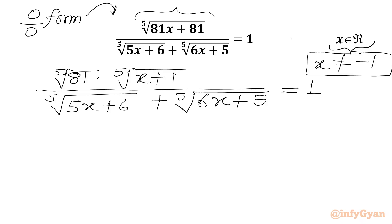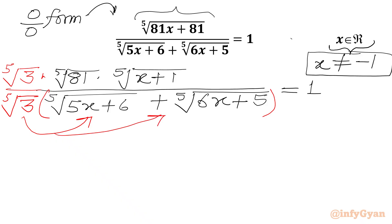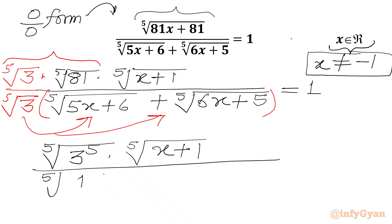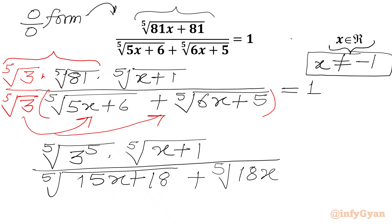Now I will multiply our LHS numerator and denominator by the fifth root of 3. Here also we will multiply with fifth root of 3, so we multiply this fifth root of 3 with both terms. In the numerator, fifth root of 3 times fifth root of 81 becomes fifth root of 3 to the power 1 plus 4. So we write 3 to the power 5 times fifth root of x plus 1, over fifth root of 15x plus 18 plus fifth root of 18x plus 15.